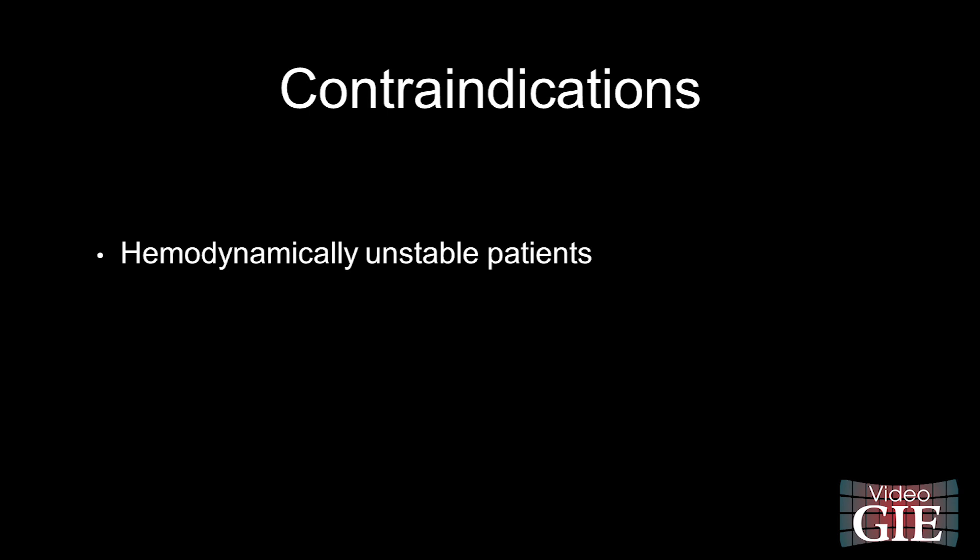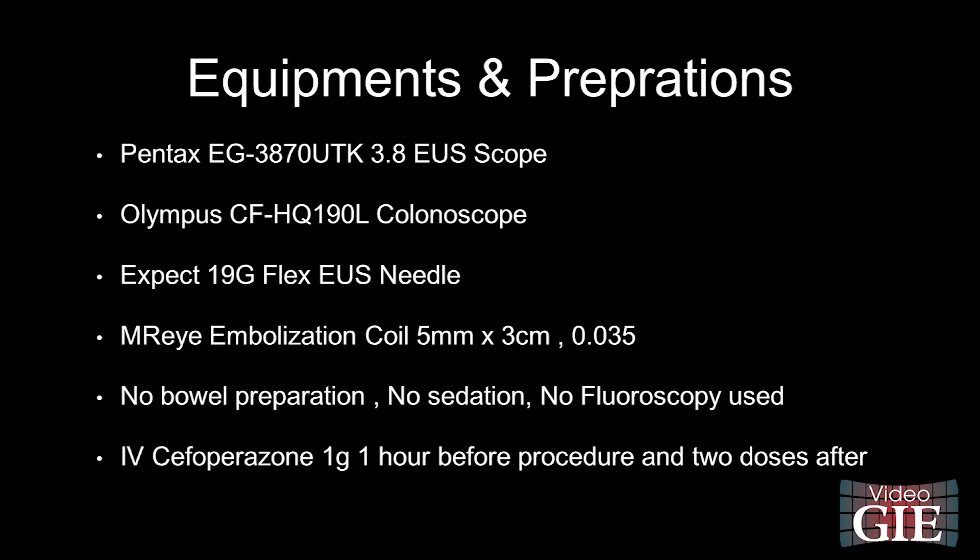Indication: Uncontrolled rectal variceal bleeding. Contraindication: Hemodynamically unstable patients. Equipment and preparations: Pentax EG3870UTK 3.8 EUS scope, Olympus CF HQ190L colonoscope, Expect 19-gauge flex EUS needle, M-ray embolization coil 5mm x 3cm, 0.035. No bowel preparation, no sedation, no fluoroscopy used. IV Cefepime 1g given 1 hour before the procedure, and 2 doses repeated every 8 hours after the procedure.